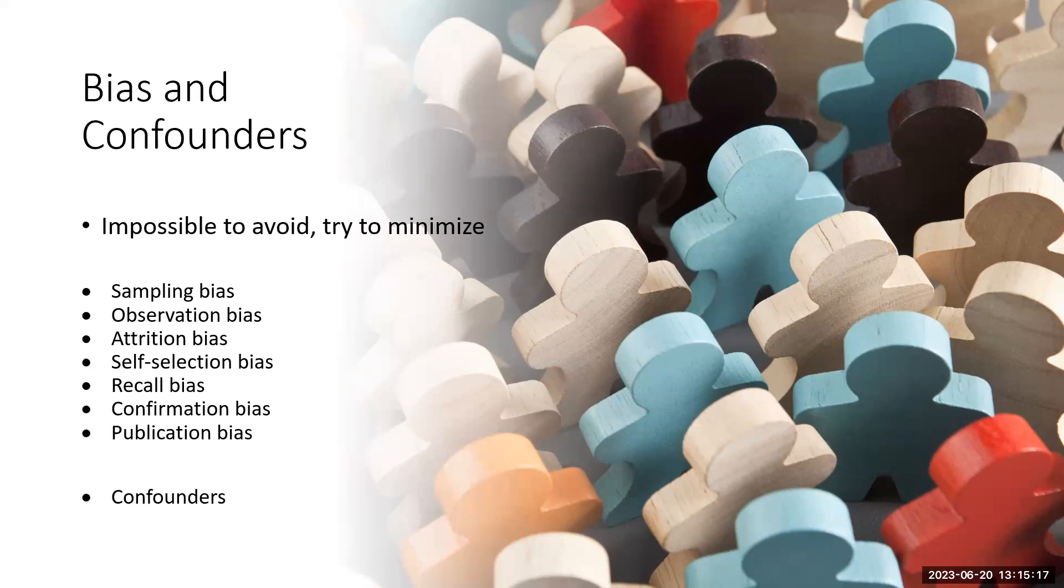Confirmation bias is more on the researcher end of things. Whether conscious or unconscious, when researchers look for information or patterns in data that confirm their own beliefs. And then there's publication bias, which is studies with negative findings or confirming the null hypothesis are less likely to be submitted and less likely to be published.